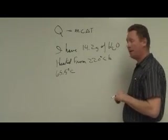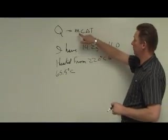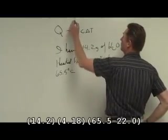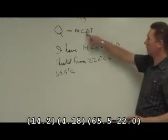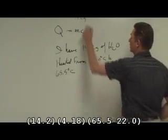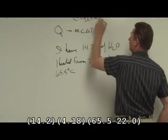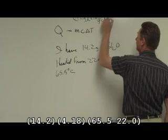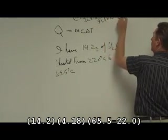And I want to know, based on that, how much energy was associated. Well, if I look at my equation, Q equals MC delta T. I know my mass. My mass had already said it was 14.2 grams. I know that it's water, and so I've memorized my specific heat of water. I know it's 4.18 joules per gram degrees Celsius. And I know that my temperature changes from 65.5, my final temperature, to my initial temperature, 22 degrees Celsius.